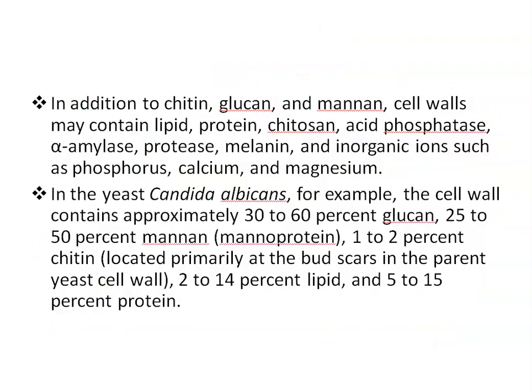In addition to chitin, glucan, and mannan, the cell wall may contain lipid proteins, chitosan, acid, phosphatases, alpha-amylase, protease, melanin, and inorganic ions such as phosphorus, calcium, magnesium, etc. For example, in Candida albicans, the cell wall contains approximately 30–60% glucan, 25–50% mannan, 1–2% chitin, 2–14% lipid, and 5–15% proteins.